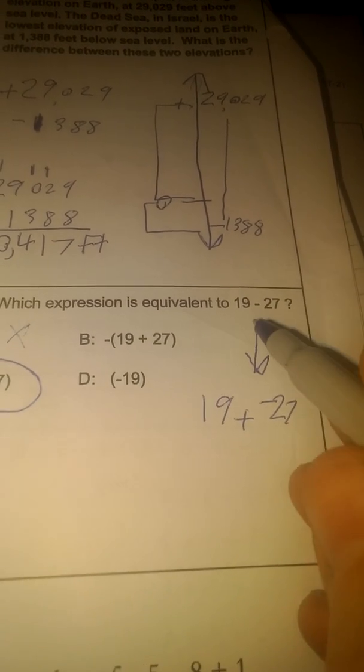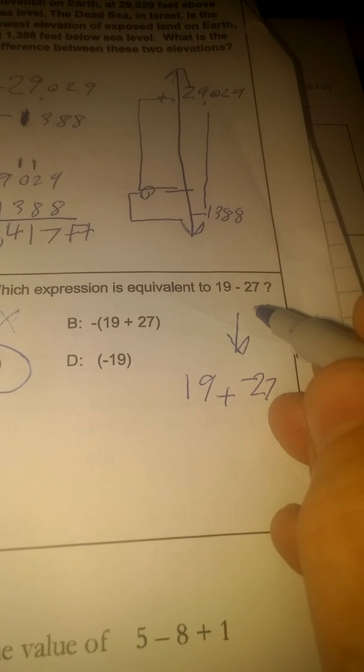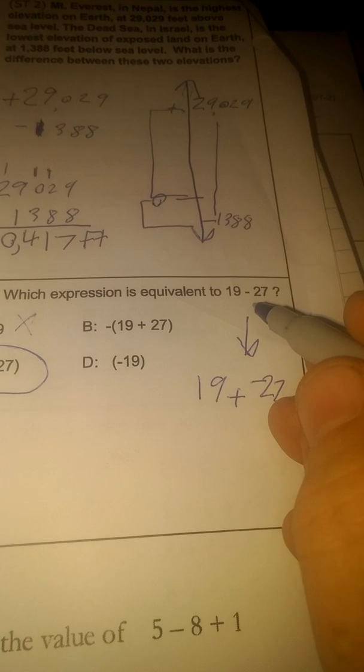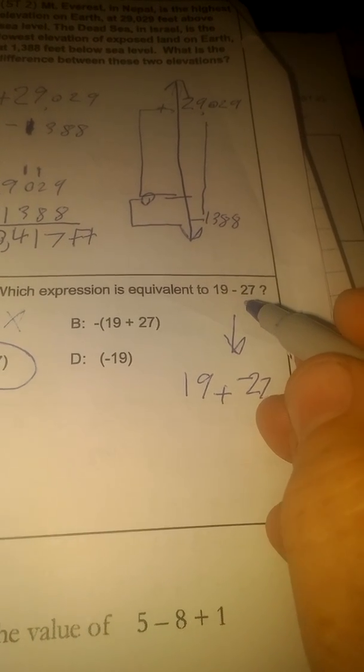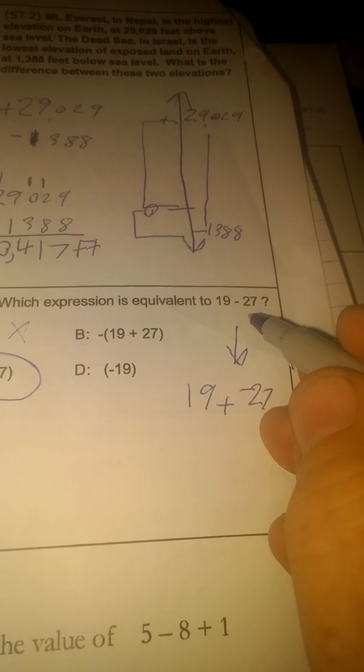So 19 minus 27, we would go 19 down to get to 0, and we would still have some more to go. So after 0, we would have another 8 to go after that. So we'd be at negative 8.